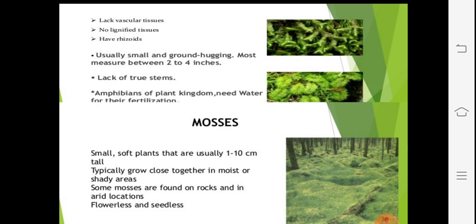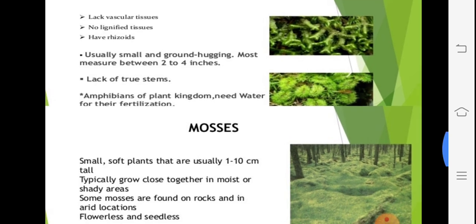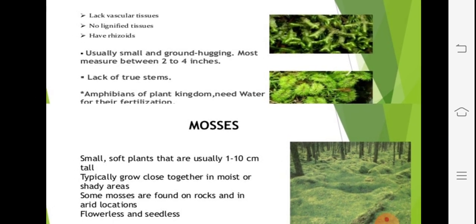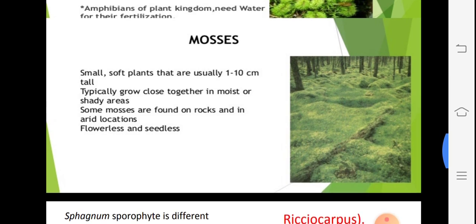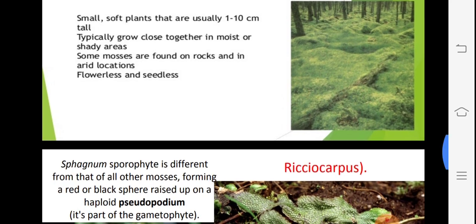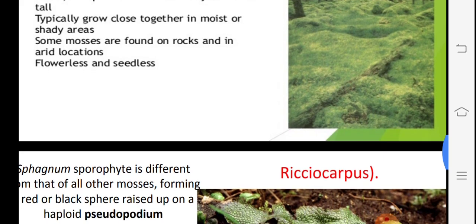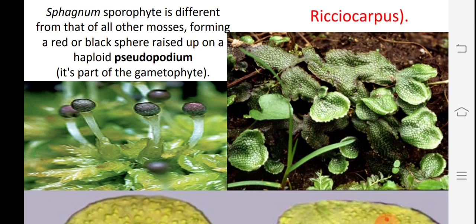A second important point: there is no lignified tissue — the cell walls are not sclerenchymatous and they lack vascular tissue, having only rhizoids. The plant body is usually two to a maximum of four inches in size. True stem is absent in mosses; these are soft plants one to ten centimeters tall, generally found at moist shady places. Sphagnum is very specific — the left-hand photograph shows Sphagnum with sporogonium: capsule, foot, and seta.